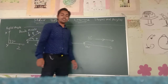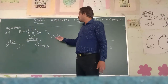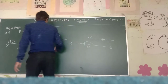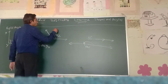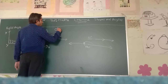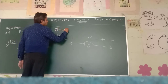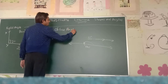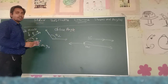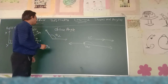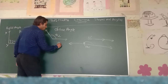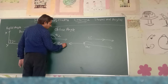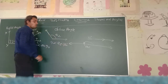We have seen what an acute angle is. Now another angle is obtuse angle. What is called obtuse angle? You can see that theta 2 is more than 90 degrees but less than 180 degrees, and therefore it is called obtuse angle.